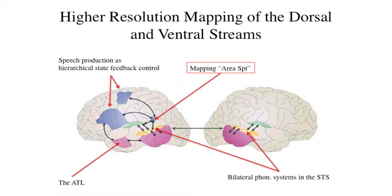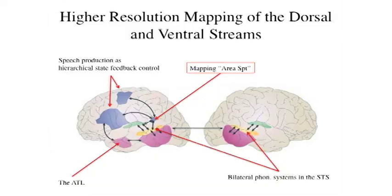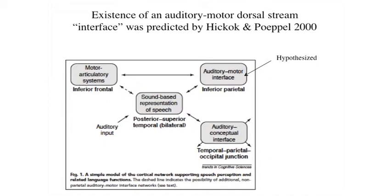So the speech recognition system appears more bilaterally organized than we thought. The production side is more left dominant — when you have left hemisphere damage and aphasia, you'll typically have speech production-related problems. The next topic is area SPT — Sylvian Parietal Temporal — named for its location, which tends to be left dominant. Based on the logic that there must be some interface between auditory speech and motor speech — therefore some dorsal stream — we hypothesized the existence of a cortical system performing a coordinate transform: taking auditory format representations and converting them into motor format representations to reproduce sounds.